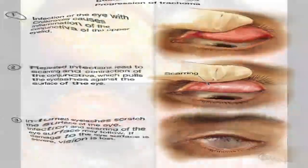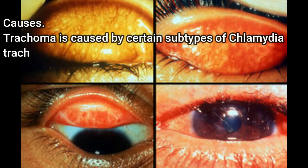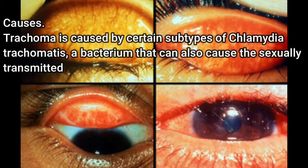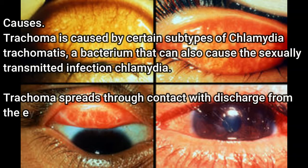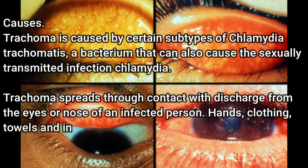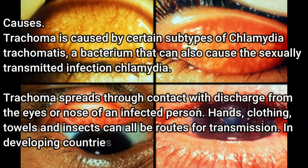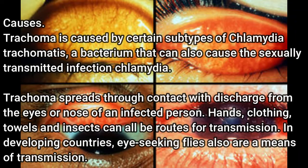Trachoma is caused by certain subtypes of Chlamydia trachomatis, a bacterium that can also cause the sexually transmitted infection chlamydia. Trachoma spreads through contact with discharge from the eyes or nose of an infected person. Hands, clothing, towels, and insects can all be routes for transmission. In developing countries, eye-seeking flies are also a means of transmission.